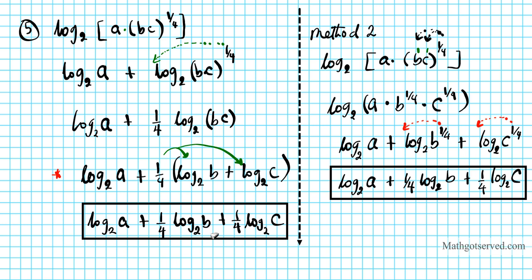This method is much quicker and safer. It eliminates the grouping constraint so that when applying the product property of logarithms, you don't have to be as careful. You do need to remember to distribute the one-fourth to every single term.